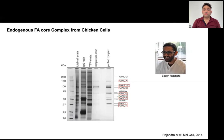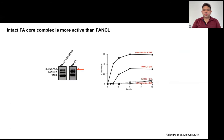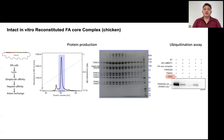Earlier, Eason Rajendra, a former postdoc from Laurie's lab, demonstrated that the FA core complex is indeed formed by eight stably associated subunits that he pulled down from chicken DT40 cells. Eason also showed that the intact FA core complex robustly ubiquitinates compared to isolated FANCL, and this ubiquitination increases in the presence of DNA, which raises the question of the role of DNA in FA core activation. To answer these questions, we needed a large amount of FA core complex for structural and biochemical work. We cloned the entire complex in a baculovirus expression system, allowing us to obtain milligram quantities of the recombinant FA core for the first time.